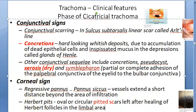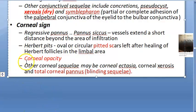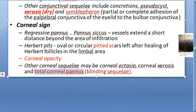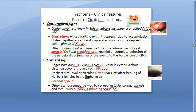Total corneal pannus means there is a blinding sequel — this is the corneal sequel after all the damage that occurs. Since the cornea is avascular and should not become vascularized, total corneal pannus represents the end-stage blinding complication.